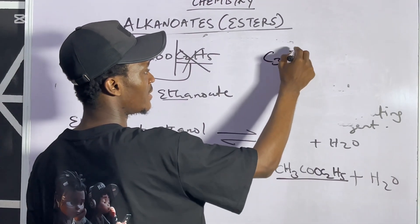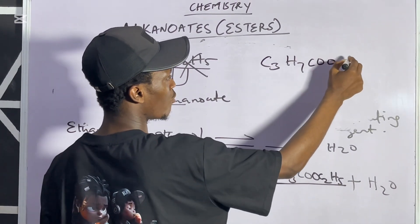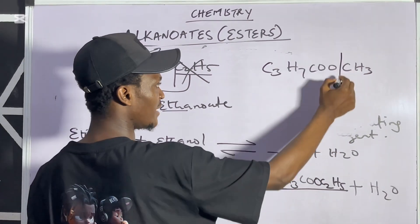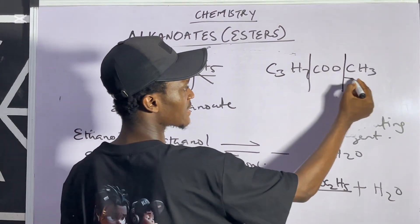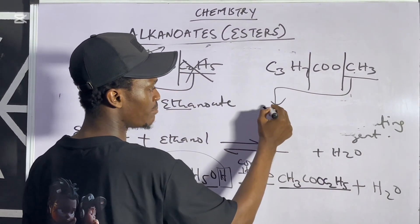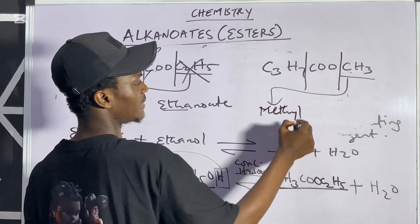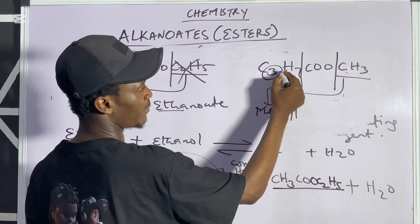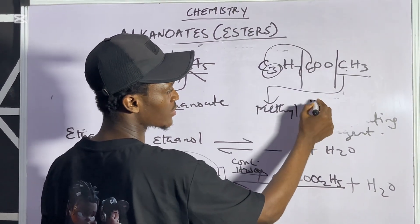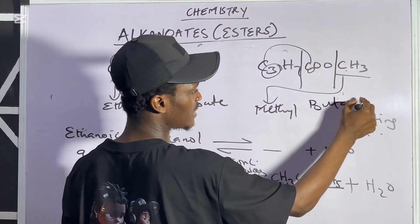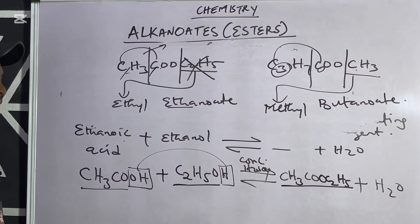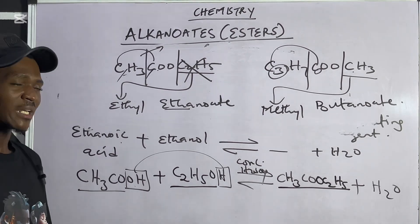Another example: if you are given C₃H₇COOCH₃ and told to name it — split into three parts. The last part, CH₃, has one carbon — that's 'methyl.' Then we have three carbons plus one carbon giving four carbons total — four is 'butanoate.' So this is called methyl butanoate.